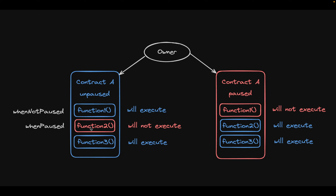If you add the modifier whenPaused to a function, it will only execute in the paused state. A function with no modifier remains unaffected by the contract state. So when the contract is unpaused: function 1 (whenNotPaused) executes, function 2 (whenPaused) does not execute, and function 3 (no modifier) executes. When you change to paused state: function 1 does not execute, function 2 executes, and function 3 still executes.